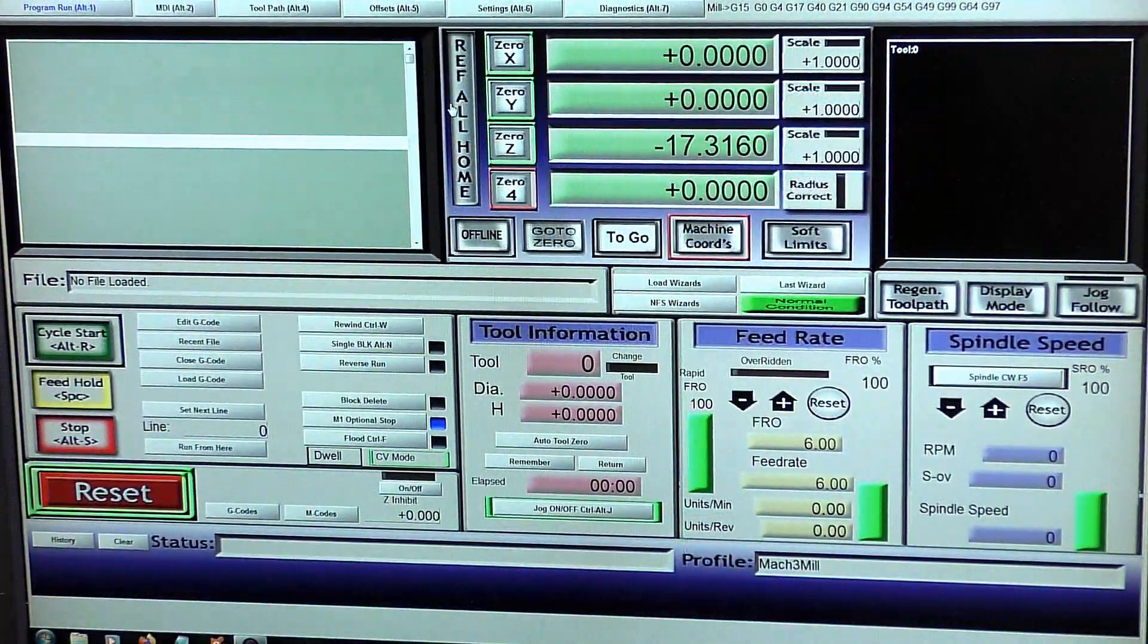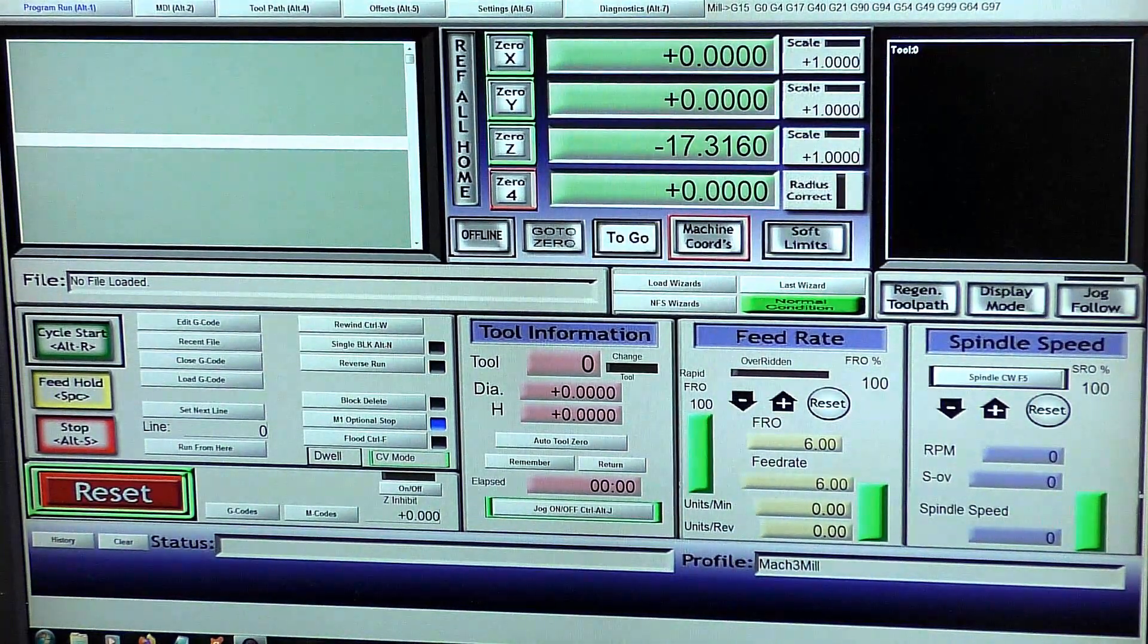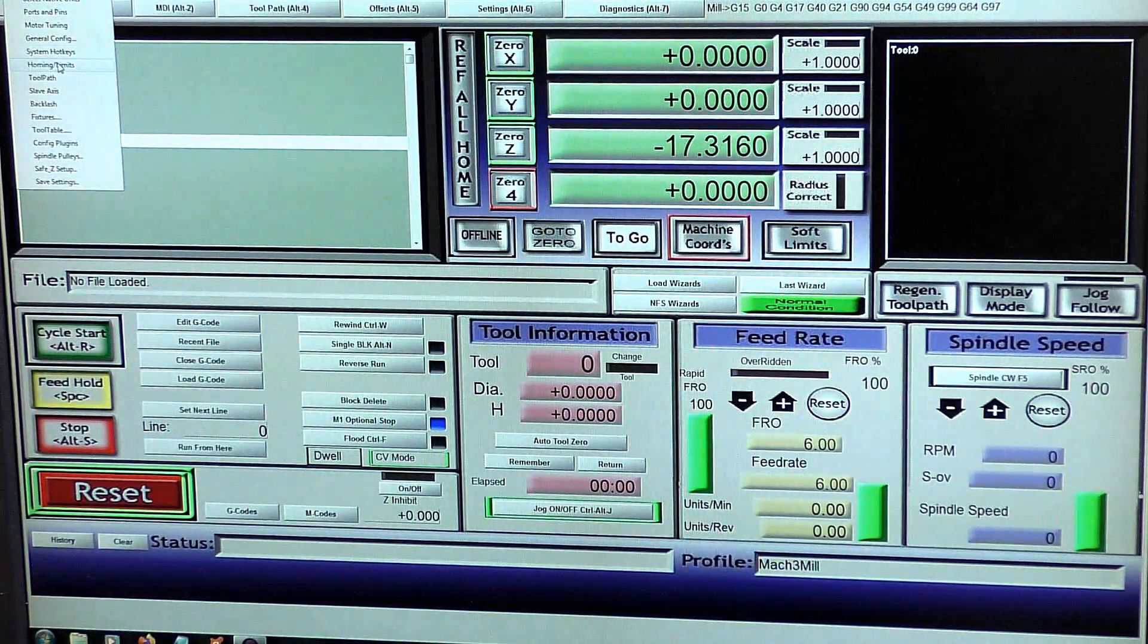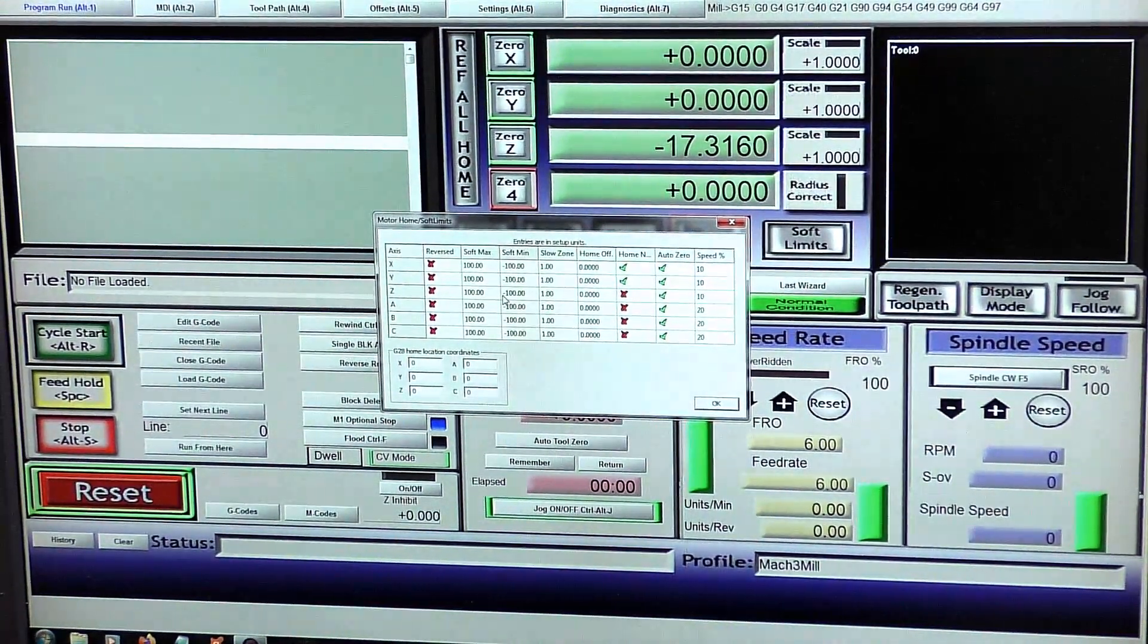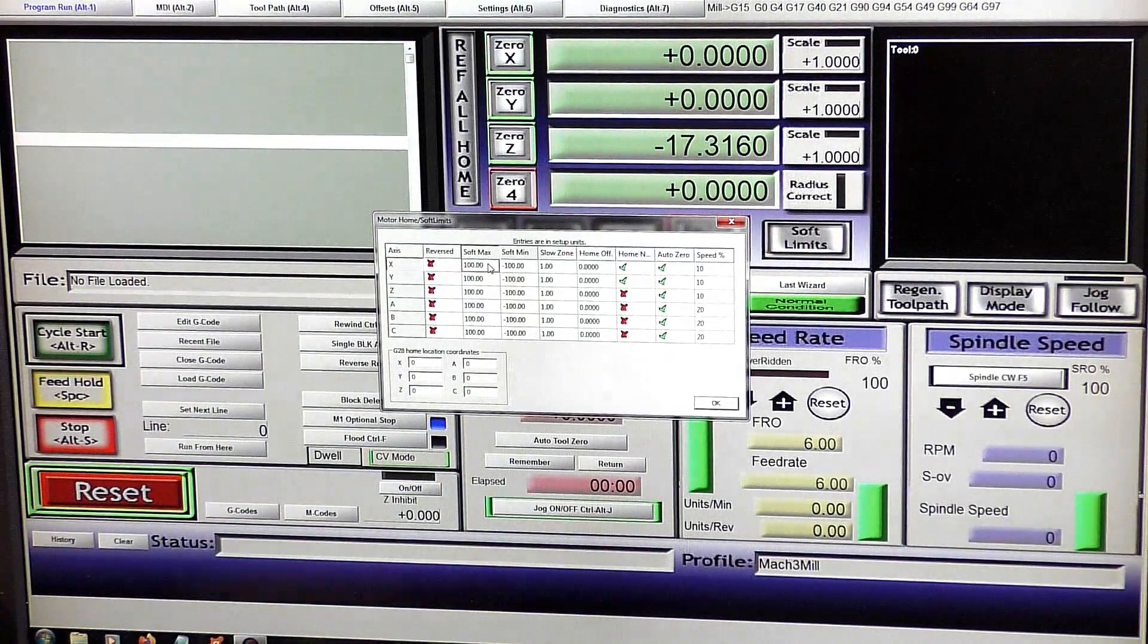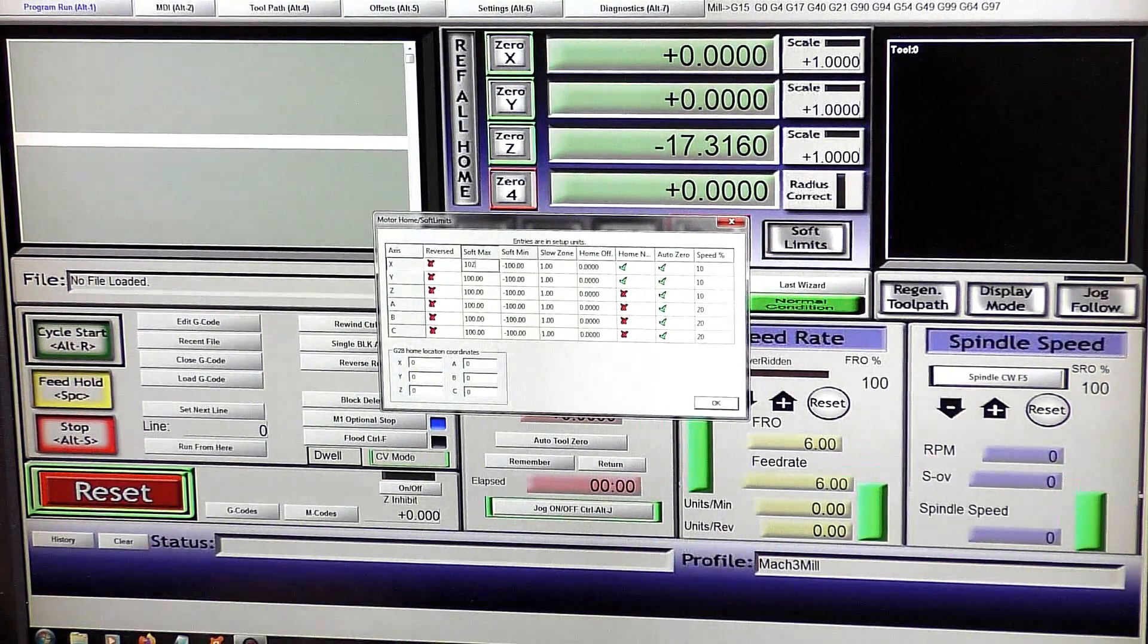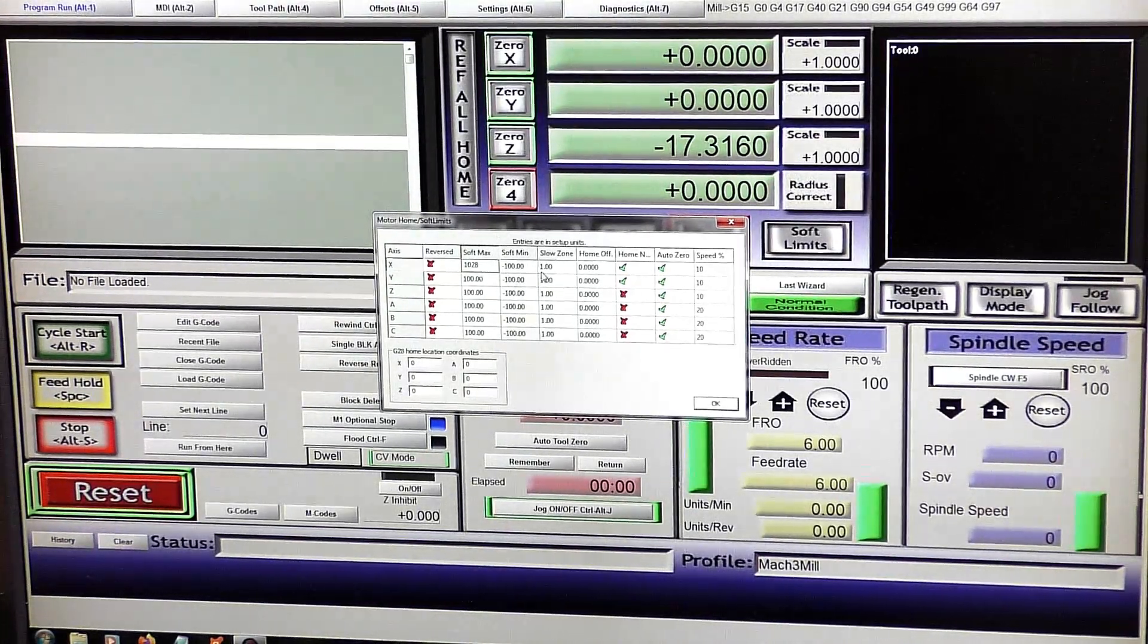So having measured the amount of travel on the axes, you come into Config and you come down to Homing and Limits, and you can set them in here.